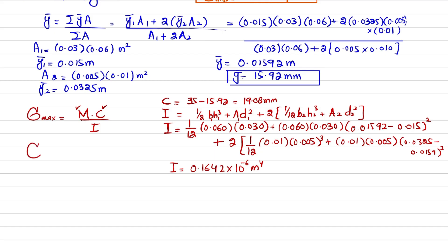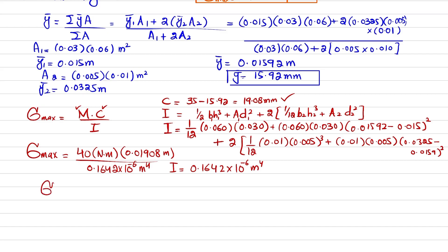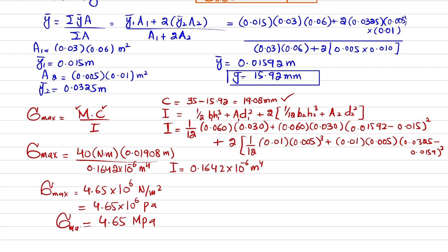Now plugging into σ_max = M·C / I: σ_max = (40 N·m × 0.01908 m) / (0.1642 × 10⁻⁶ m⁴) = 4.65 × 10⁶ Pa = 4.65 MPa. This is the maximum normal stress when two small ribs are added at the bottom of the rectangular section.